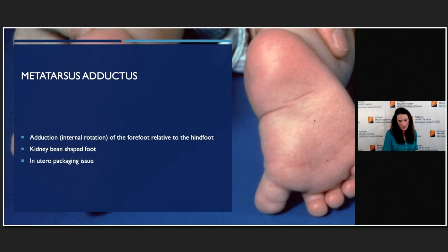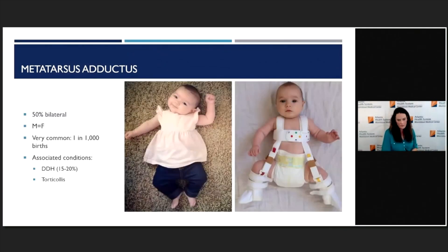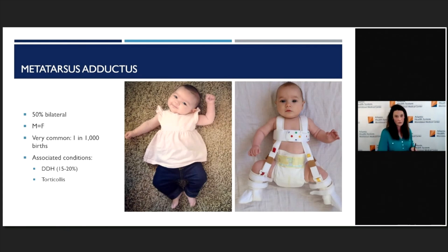Going down to the bottom, metatarsus adductus is internal rotation or adduction of the forefoot relative to where the heel is, giving you a kidney bean-shaped foot. This is another one of those in utero packaging issues. About half the time it's bilateral, it's about equal in males and females, and it's really common — about one in a thousand births. The more important thing to remember about metatarsus adductus is that it's associated with other conditions about 15 to 20% of the time — specifically DDH, which is something you really don't want to miss, and also torticollis. That's sort of the trifecta of in utero packaging.